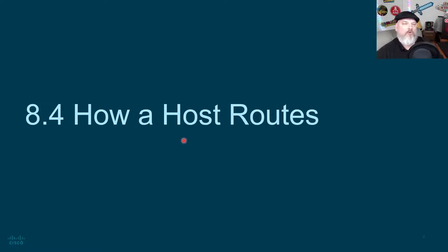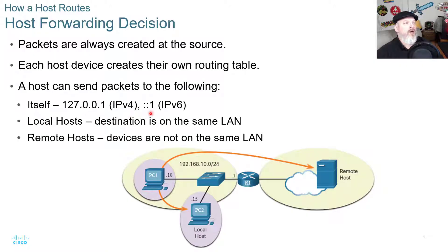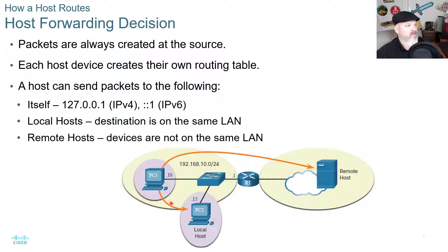How does a host route? There's a host forwarding decision — packets are always created at the source, and each host device creates its own routing table. A host can send packets to itself at 127.0.0.1 on IPv4 or ::1 on IPv6, to a local host where the destination is on the same local area network, or to a remote host where devices are not on the same local area network.